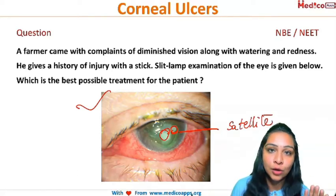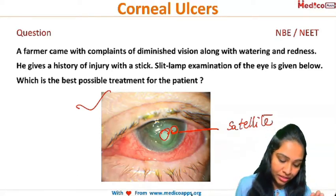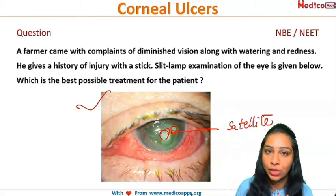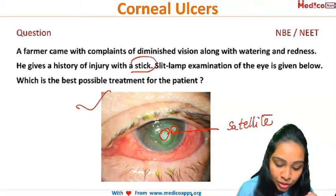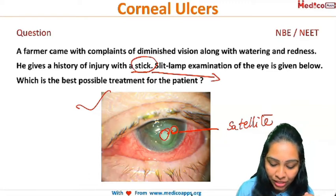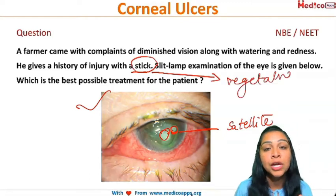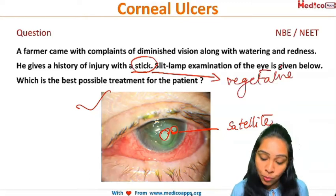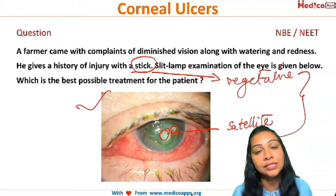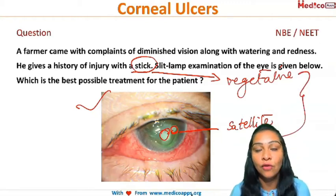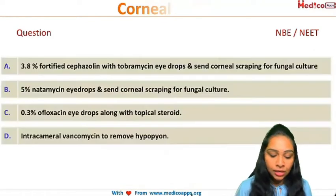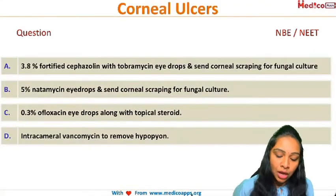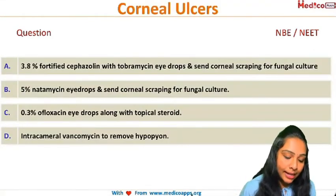There's another clue in the question which makes it easier: the history of injury with a stick. A stick is vegetative matter, so injury with vegetative matter combined with the satellite lesion — these two points are pointing towards the diagnosis of fungal corneal ulcer.